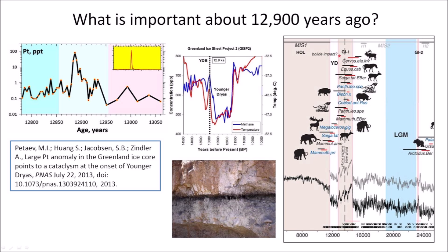The date 12,900 years ago is important because there are multiple indications of a global catastrophe at this time. In 2013, Petayev and three co-authors found a large platinum anomaly in the Greenland ice core pointing to a cataclysm at the onset of the Younger Dryas — a sudden cooling period lasting about 1,200 years. Further work showed the platinum anomaly is widespread and serves as a chronological marker. The Younger Dryas boundary 12,900 years ago also marks the extinction of the North American megafauna and the disappearance of many animal species and the Clovis culture. The energy of ballistic sedimentation forming the Carolina Bays was equivalent to about 8 megatons per square kilometer in some areas, and a black mat marks the boundary of this extinction event.